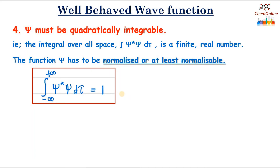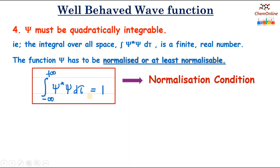The normalization condition is: ∫_{-∞}^{+∞} ψ* · ψ dτ = 1. If a function ψ satisfies this condition, then we can treat ψ as an acceptable wave function.